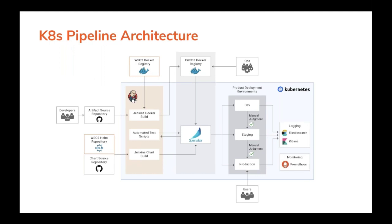The WSO2 Kubernetes pipeline itself runs on Kubernetes. It uses Jenkins for continuous integration and Spinnaker for continuous deployment. There is also a cluster-wide Elastic Stack and Prometheus operator for centralized logging and performance monitoring of the environment.